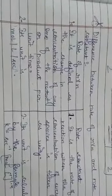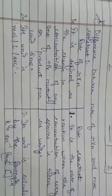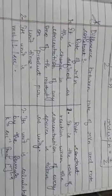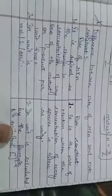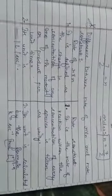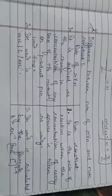Now, the difference between rate of reaction and rate constant: the rate of reaction is the change in concentration of any one of the reactants or products per unit time. The rate constant is defined as the rate of reaction when the concentration of each reactant is taken as unity. The unit of rate of reaction is always mole per liter per second, but the unit of the rate constant depends upon the order of reaction and is calculated by the general formula: k equals second inverse times (mole per liter) raised to the power (1 minus n).